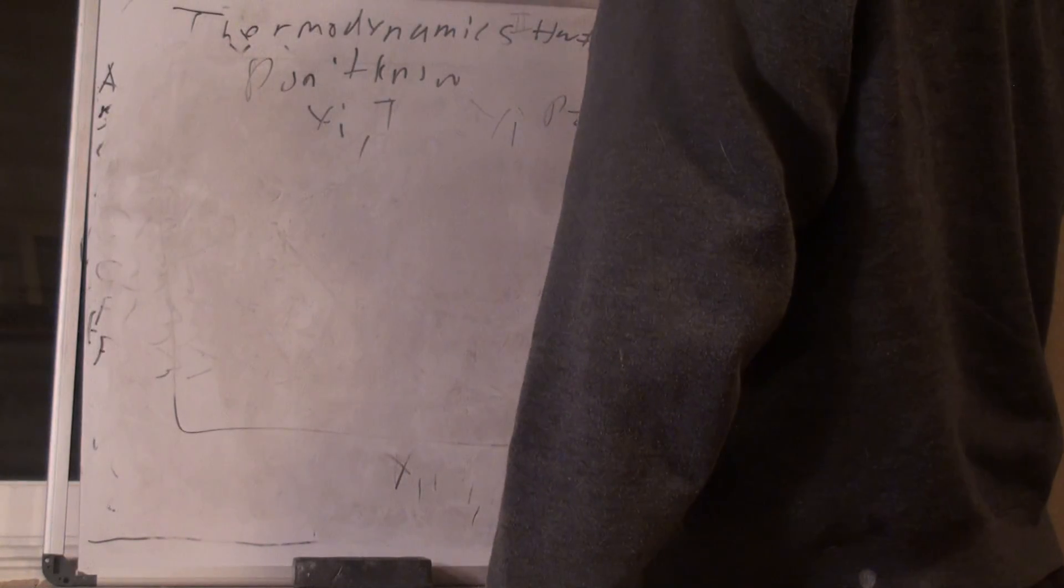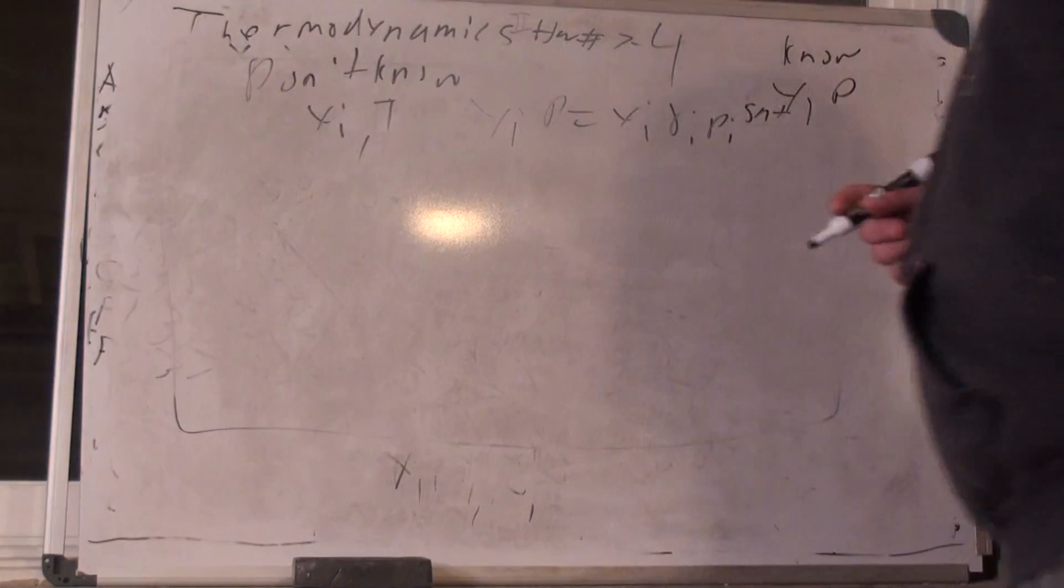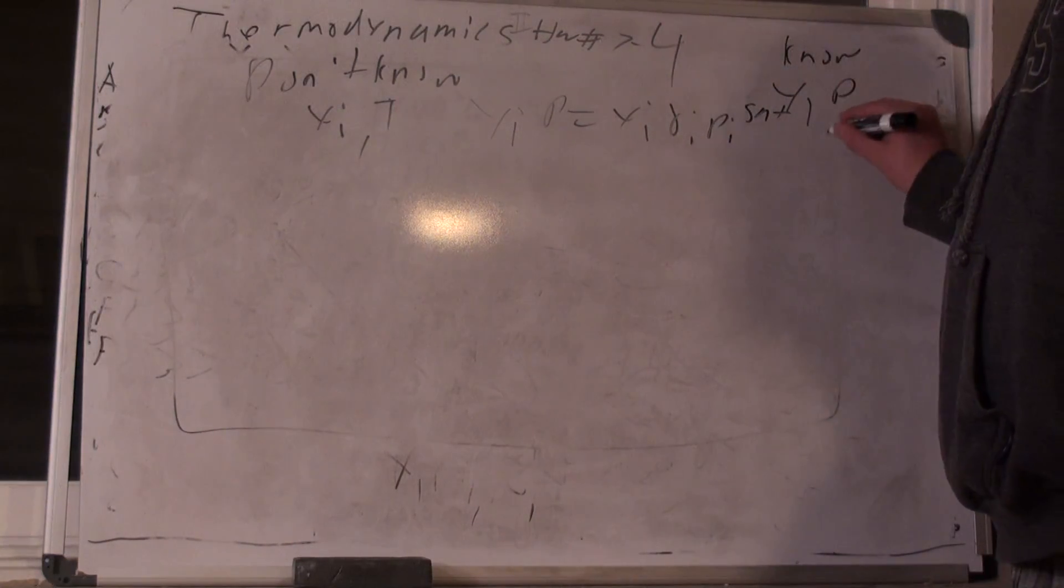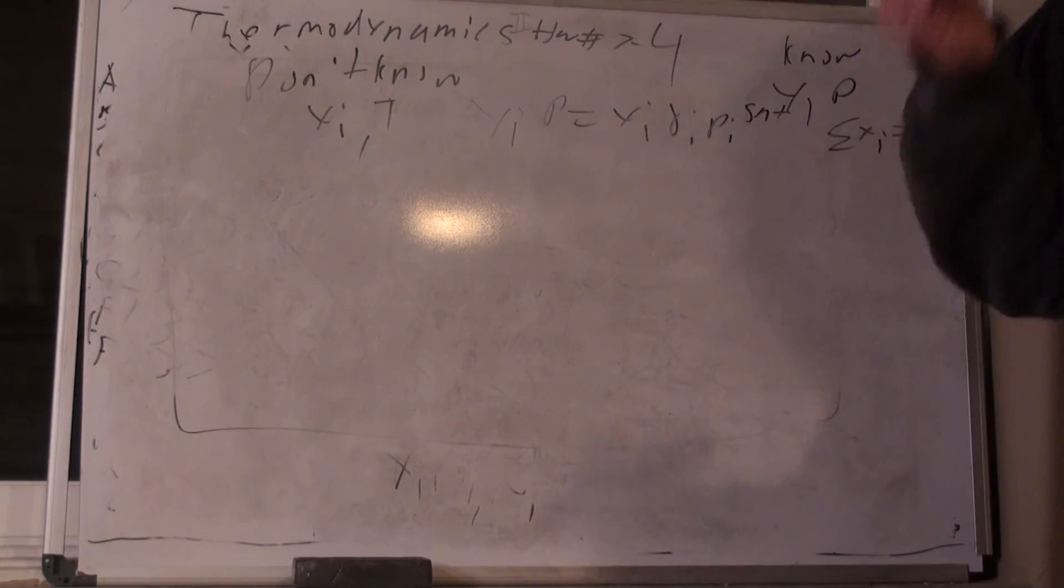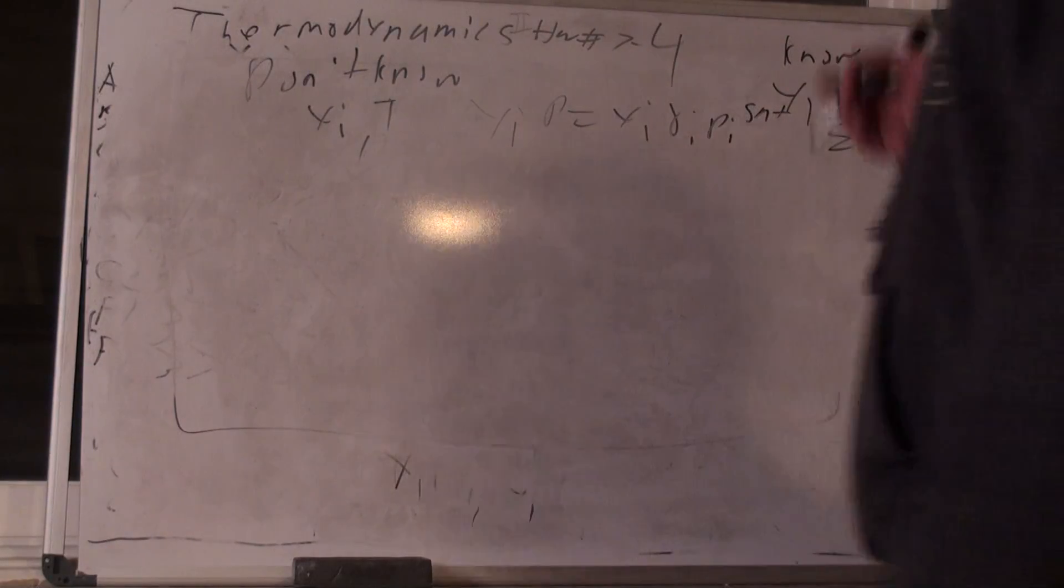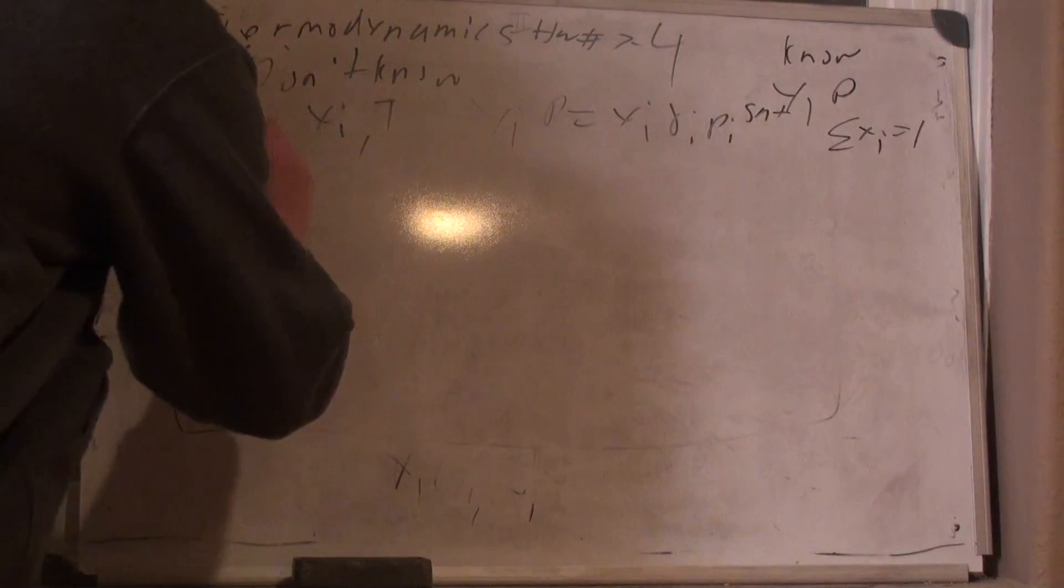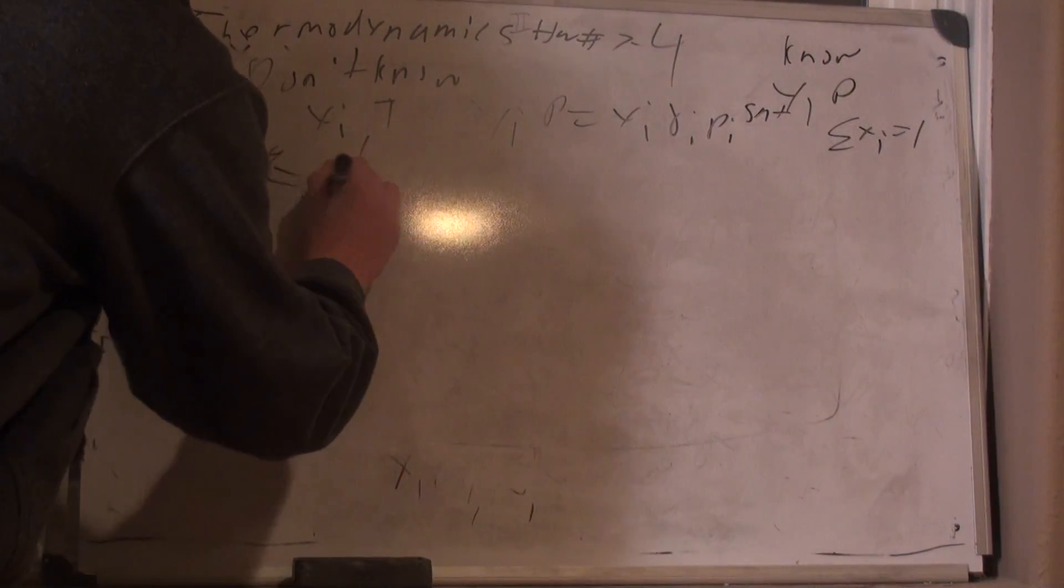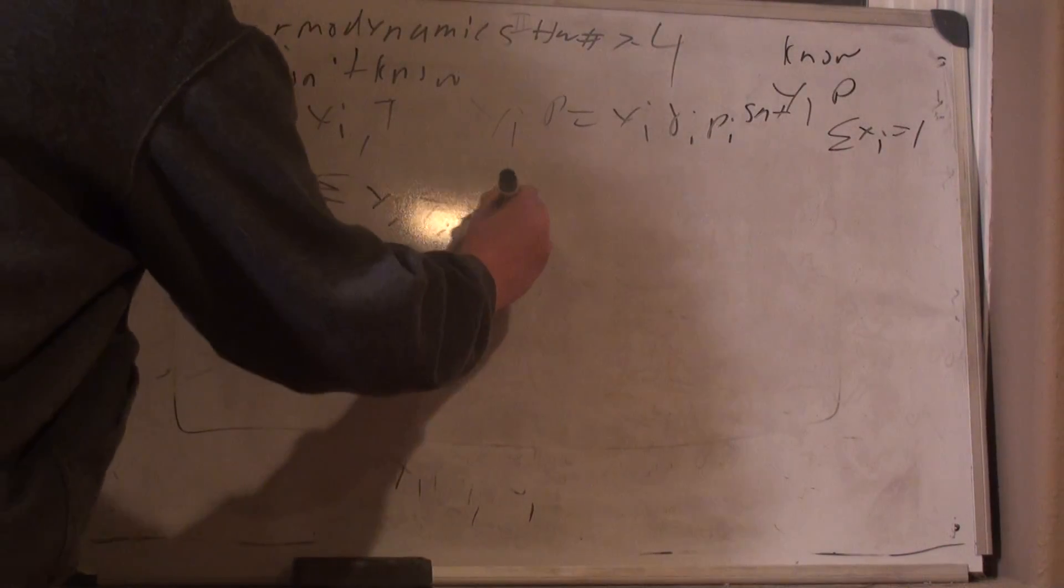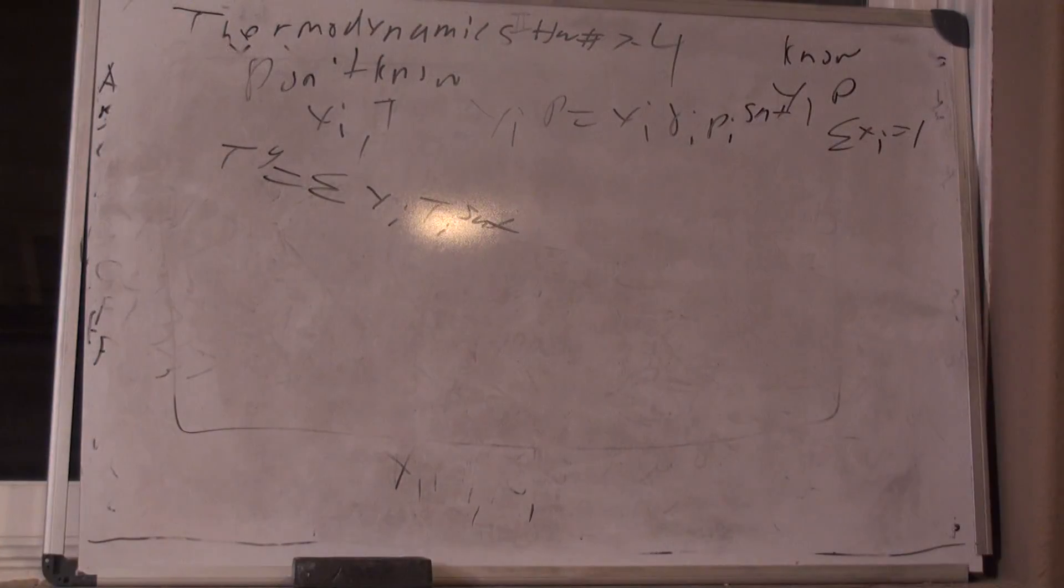So I need to write down Raoult's law. YiP is equal to xi gamma i pi sat. I also need to recognize that I know yi, so that means the summation of xi is equal to one. I don't know temperature. So whenever I don't know temperature, I have to guess temperature. I guess temperature using reverse Antoine's. And so I'm going to say that my temperature guess to start with is the summation of yi ti sat, coming from reverse Antoine's and the pressure that is known. So that gives me some guess temperature.